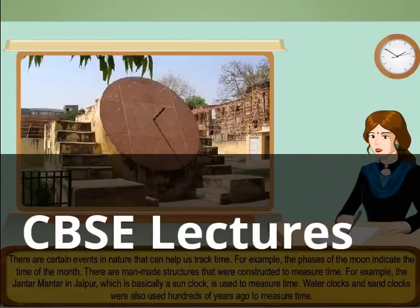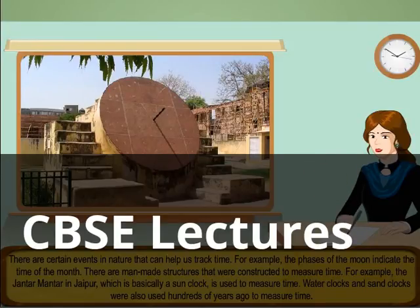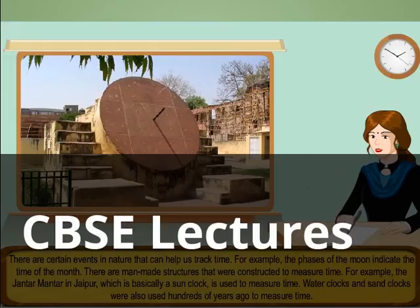There are man-made structures that were constructed to measure time. For example, the Jantar Mantar in Jaipur, which is basically a sun clock, is used to measure time.